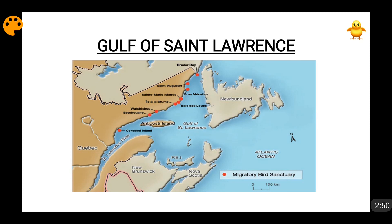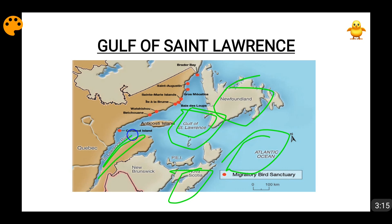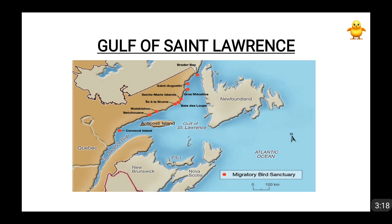Then comes the Gulf of St. Lawrence, which is the world's largest estuary. As you can see, this is Nova Scotia and this is Newfoundland — all Canadian territories. The most important fact about the Gulf of St. Lawrence is that it is a part of the Atlantic Ocean. The St. Lawrence River brings the water of the five Great Lakes of North America into this gulf. So the North American Great Lakes water flows into the Gulf of St. Lawrence through the St. Lawrence River.